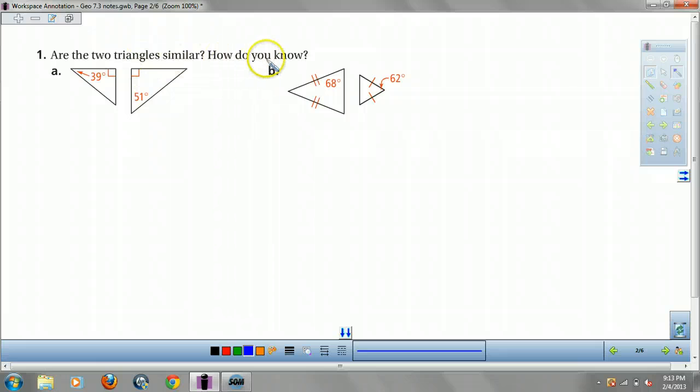Are these two triangles similar? How do you know? Well, for A, if that's 39 degrees, then we know these are both 90. I know this is 51. If this is 51, that's 90. This is going to be 180 minus 90 minus 51, which is 39 degrees. Hence, yes, by AA similarity theorem.